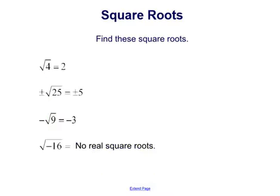The square root of 4 is just positive 2. Plus or minus the square root of 25 is plus or minus 5 — both the positive and negative answers. The negative square root of 9 is equal to negative 3. And the square root of negative 16, when the negative is inside the square root, the answer is that there is no real square root of negative 16.